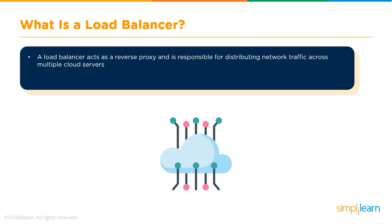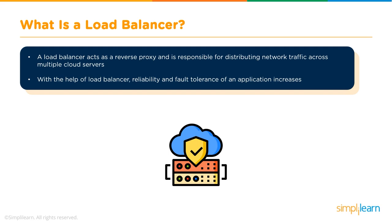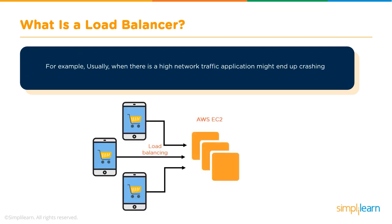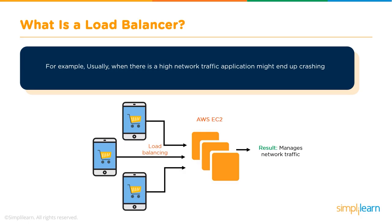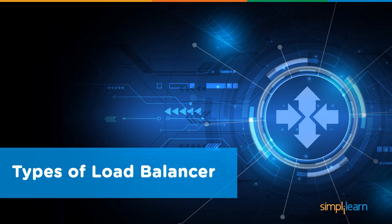A load balancer increases fault tolerance and reliability. When high network traffic hits your application, instances could crash without traffic management. AWS load balancers distribute network traffic across backend servers to increase application performance. As shown in the diagram, traffic from different resources lands on the load balancer, which distributes it evenly across three EC2 instances.